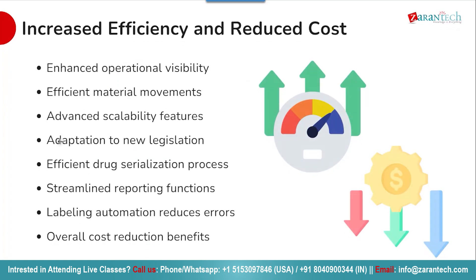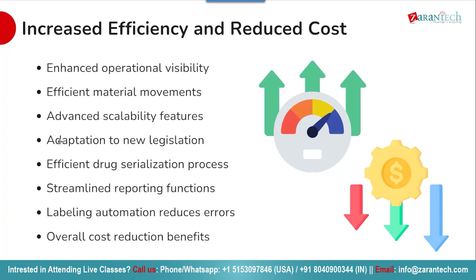Let us now look at increased efficiency and reduced cost. By implementing SAP ATTP, pharmaceutical companies can drive efficiency in several areas. The increased visibility helps optimize material flow and avoid supply chain disruptions. The solution is built to scale up to handle new product launches and market expansions, and it makes it easier to adopt new track and trace regulations in additional countries. The automation of serialization and reporting processes reduces effort and errors compared to manual approaches, helping pharmaceutical companies reduce their overall compliance costs.